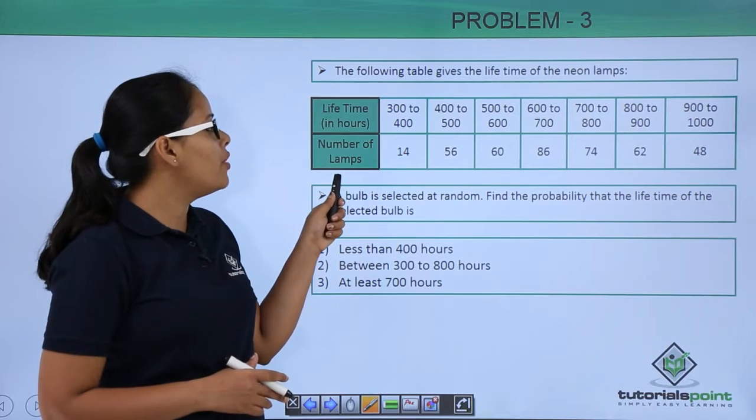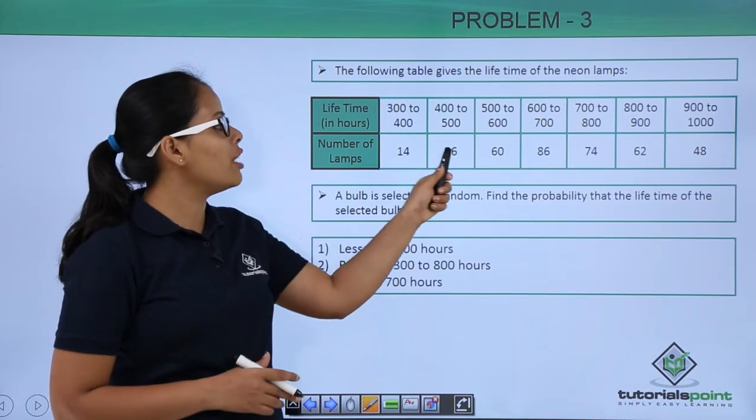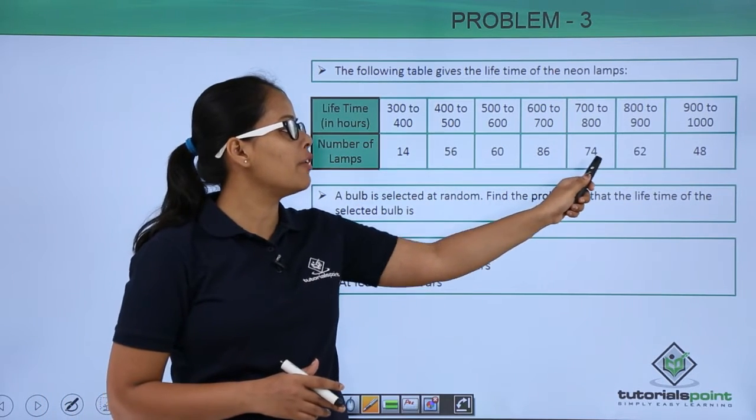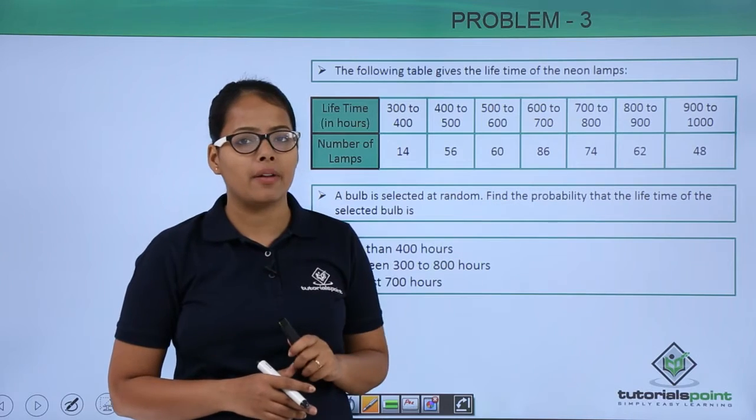The number of lamps in these intervals are 14, 56, 60, 86, 74, 62, and 48.